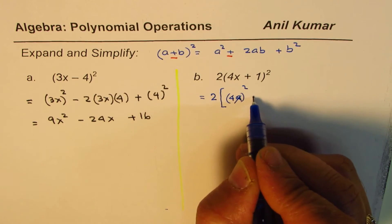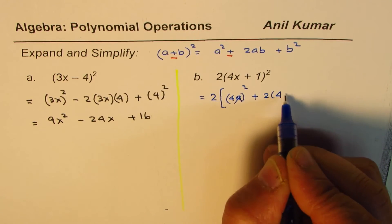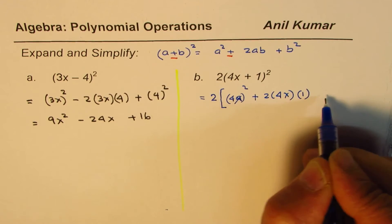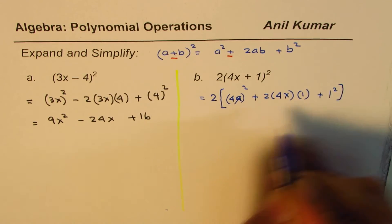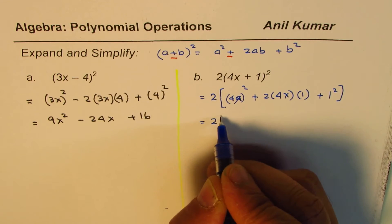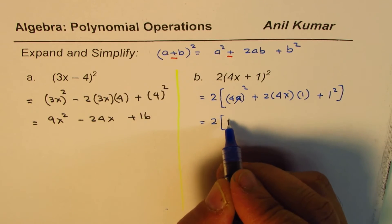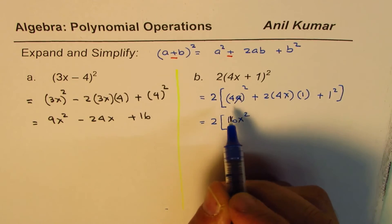4x² plus 2 times 4x times 1 plus 1². Right, so that gives us 2 times 4x square is 16x². So don't forget to square 4 also, right?